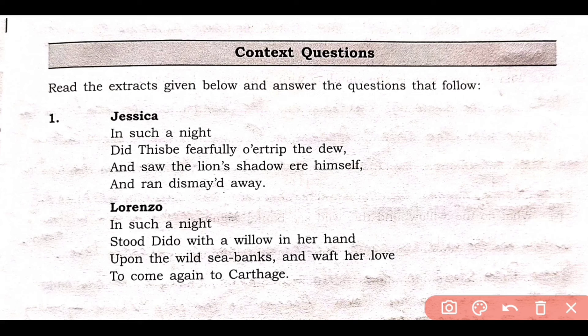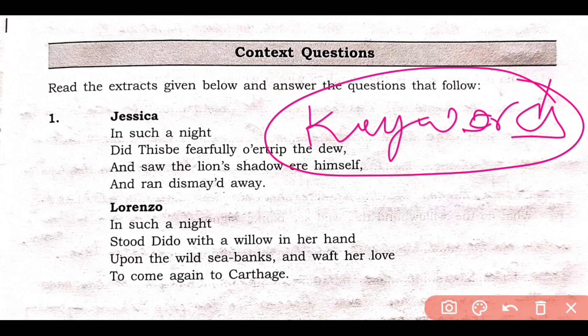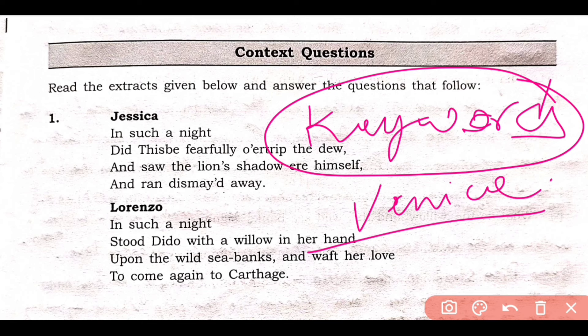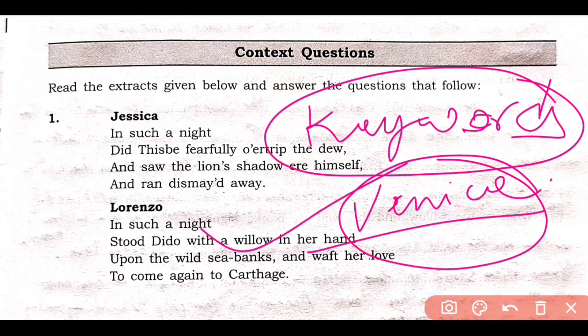Remember, don't write unnecessary extra answers. If you have been asked a specific question like 'where is this scene taking place?', and the answer is Venice, or that the scene is taking place in Belmont in Portia's house — it is so much to write. Please do not write so much that your time runs out. Answer the specific question asked, and importantly, underline the key words. If you underline the key words in ICSE, the council definitely gives you more marks. For example, if this scene is taking place in Venice — underline 'Venice'. Underlining the main key words makes it easy for teachers to check your paper.